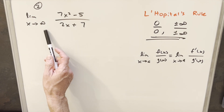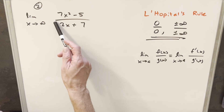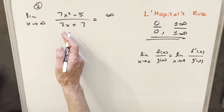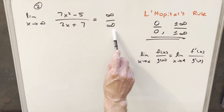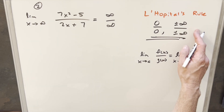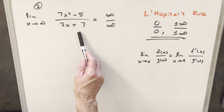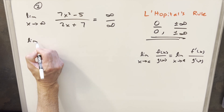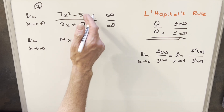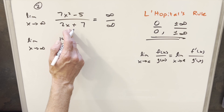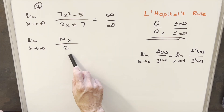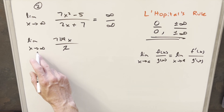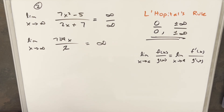For problem 2, we're looking for the limit as x approaches infinity of 7x minus 5 over 2x plus 7. Checking at infinity, the numerator gives infinity and the denominator gives infinity — so this is an indeterminate infinity over infinity form, and we can use L'Hôpital's Rule. Taking the derivative of the numerator gives 7, and the derivative of the denominator gives 2. We can cancel to get 7x over... actually, simplifying, we get 7 over 2 times... evaluating 7x at infinity, the limit goes to infinity.